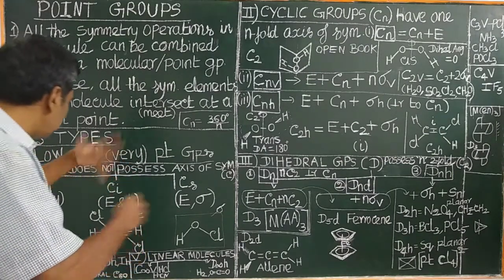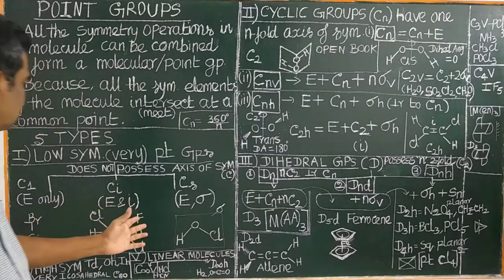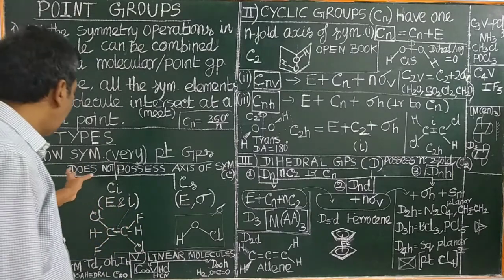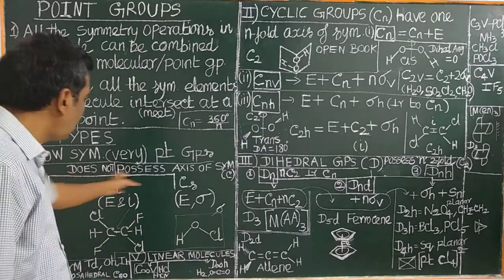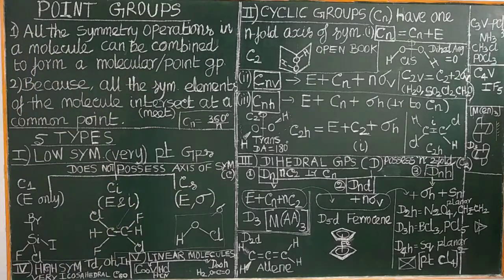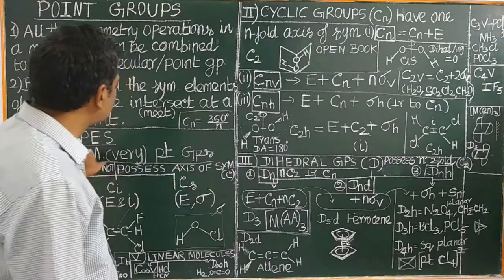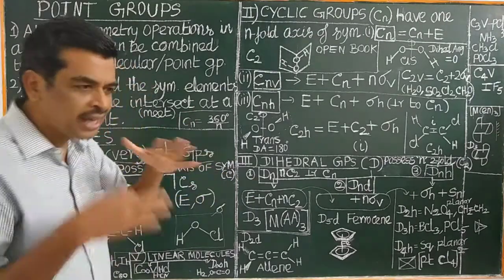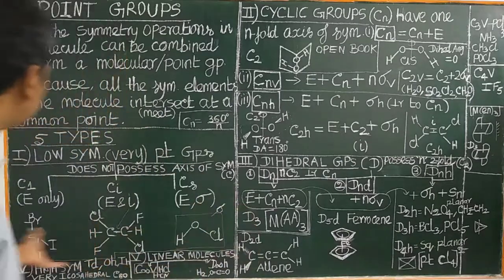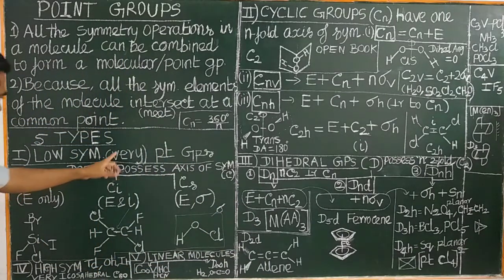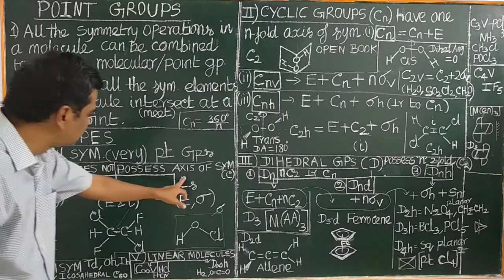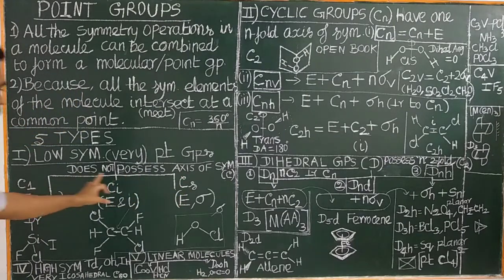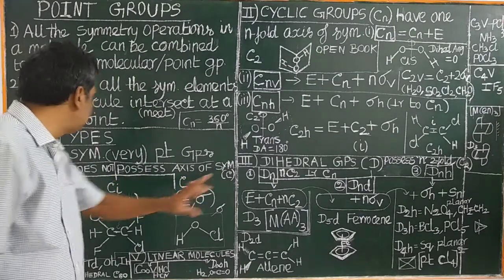These molecules do not possess any axis of symmetry. They are classified into three types: C1, Ci, and Cs.